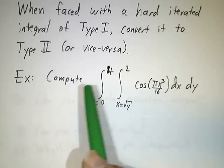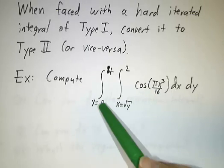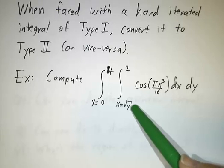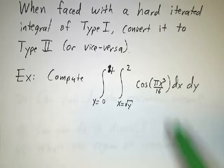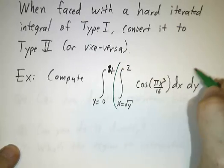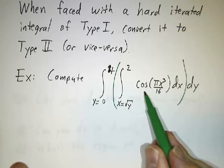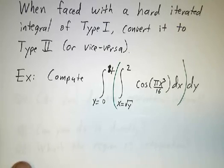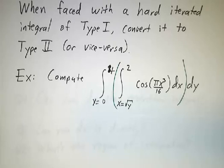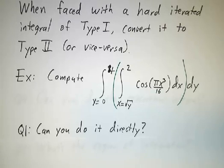So we're going to look at converting a Type 2 integral into a Type 1 integral and solving it. Our problem is to compute the integral from y equals 0 to 4 of the integral as x goes from square root of y to 2 of cosine of pi x cubed over 16, dx dy. You look at that and ask: do I know a function whose derivative is cosine of pi x cubed over 16? I can't think of one — this is just too hard. So you can't do it directly.